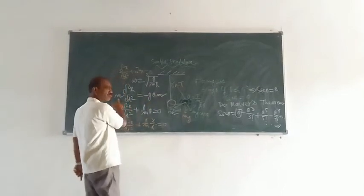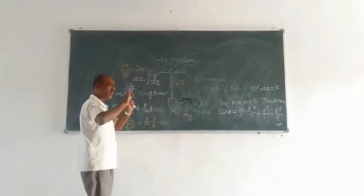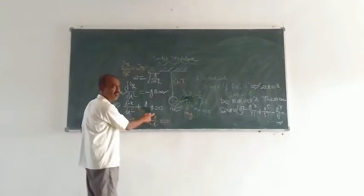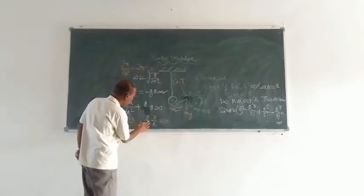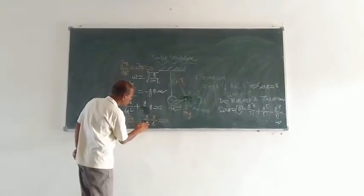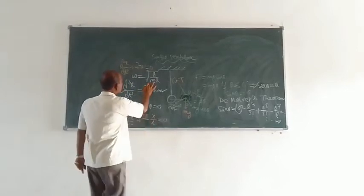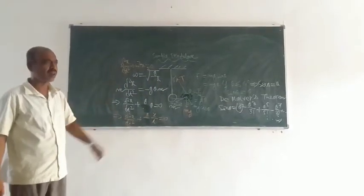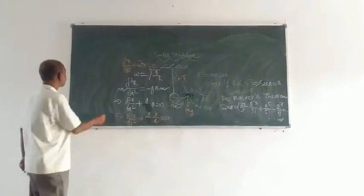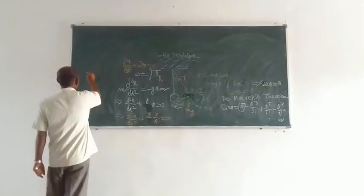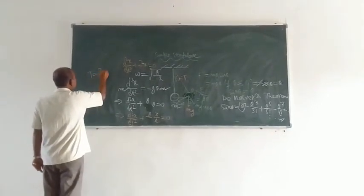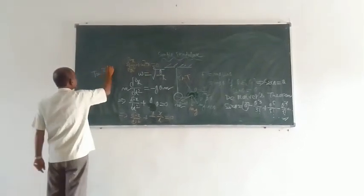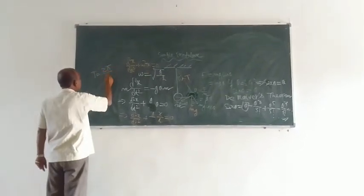Since l is present and cancels appropriately, the equation gives omega squared equal to g by l, so omega equals the square root of g by l. Comparing this with the standard SHM equation, we can write that omega equals root of g/l. The time period is T equals 2 pi divided by omega.